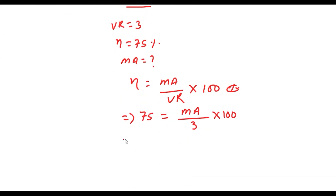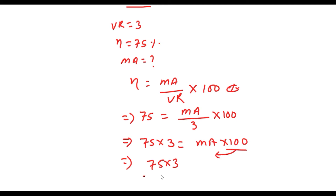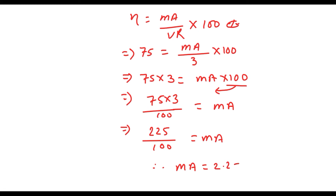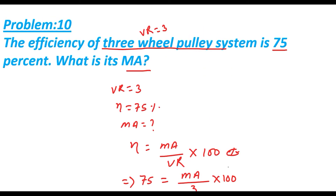By cross multiplication, 75 multiplied by 3 equals MA multiplied by 100. So 75 into 3 equals 225, and when we divide 225 by 100, we get the value of MA, which is 2.25. This is the mechanical advantage of the three-wheel pulley system.